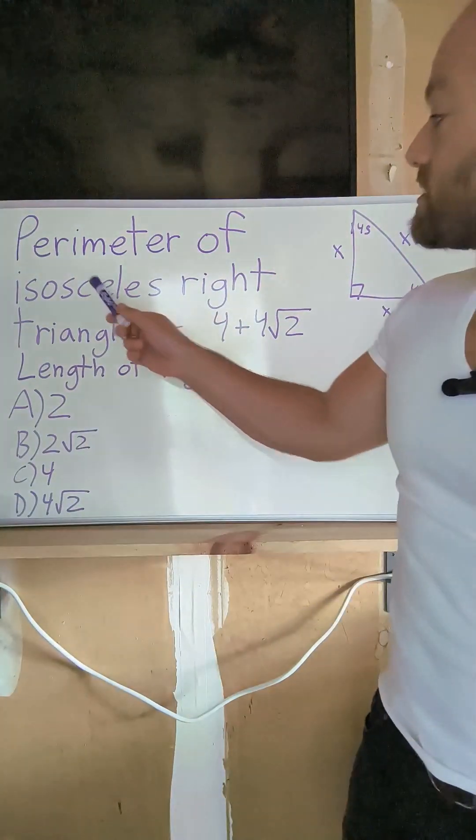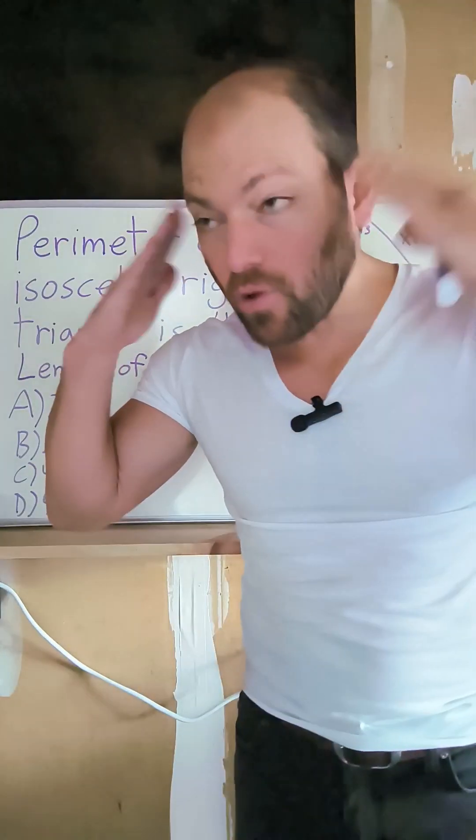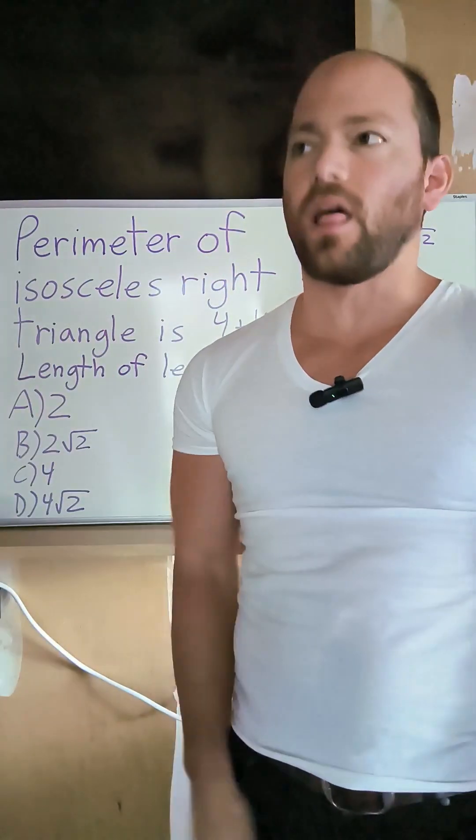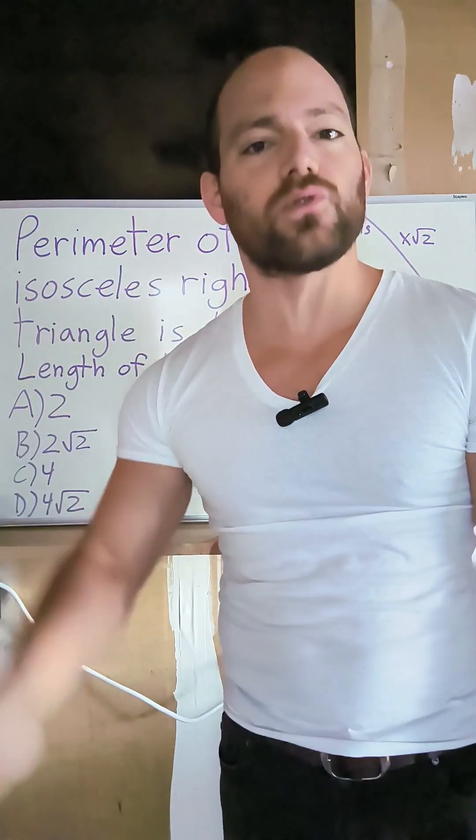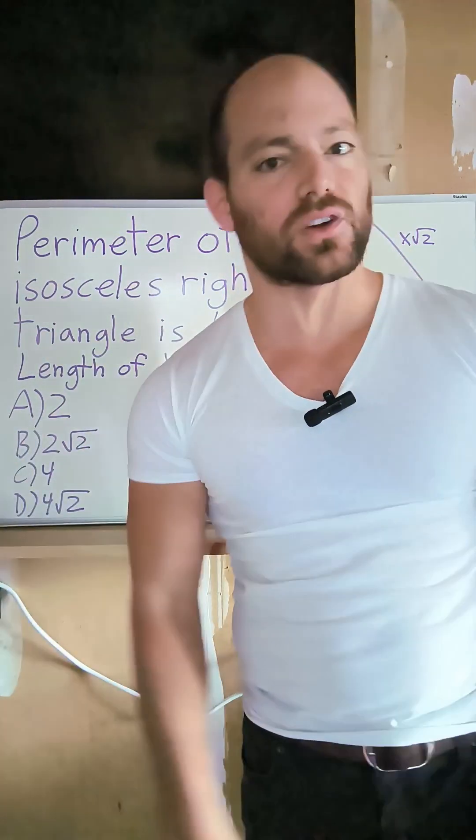They tell us isosceles right triangle, and we think we're being clever. We think, oh, well, they're talking about a 45-45-90. I know that. They're just using code words. I can see through SAT code words.